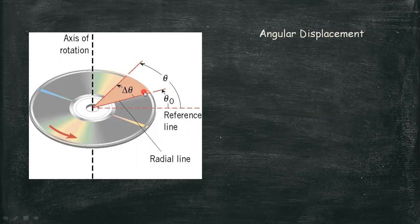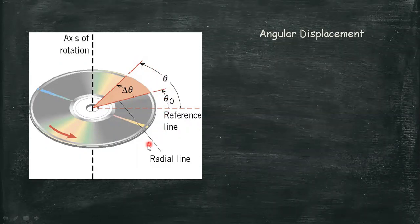By convention, the angular displacement is positive if it's counterclockwise and negative if it is clockwise direction.